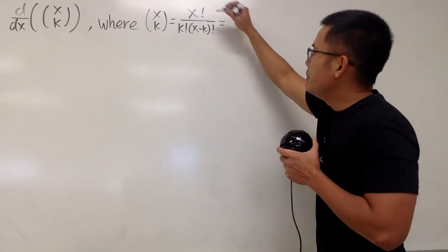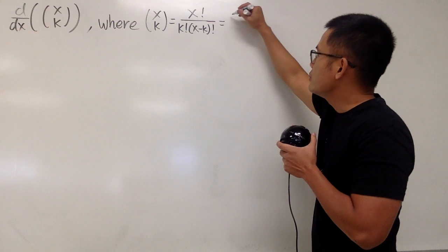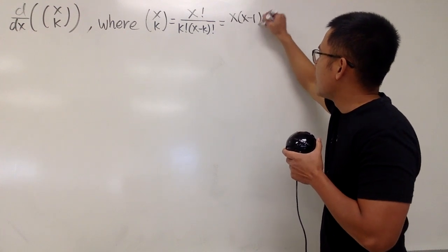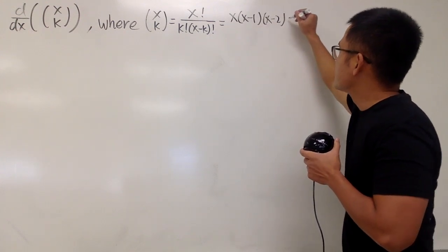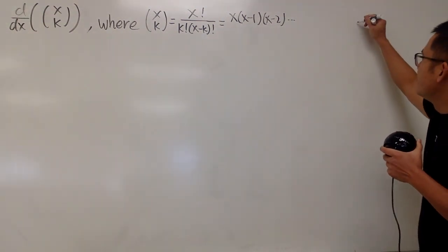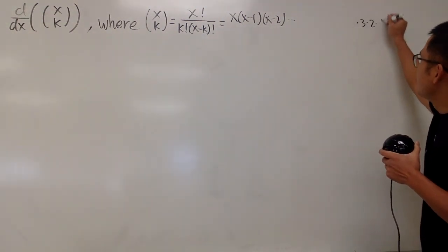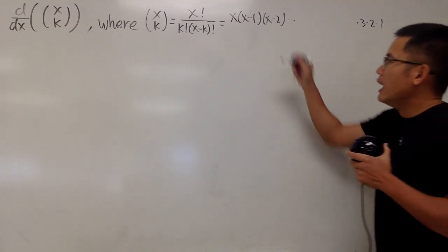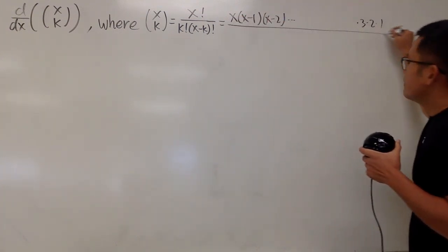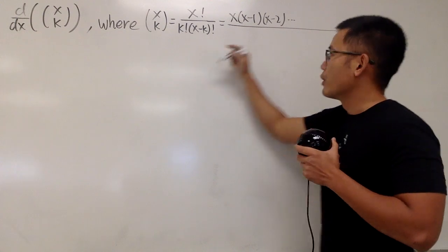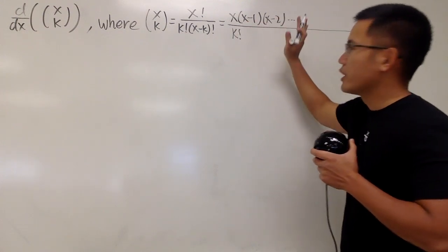Okay, here we go. Let me break down the x factorial. We'll get x times x minus 1 times x minus 2, dot dot dot. I'm going to leave some space and continue up to 3, 2, 1. And for the bottom, we are going to leave the k factorial. I'm not going to break it apart.